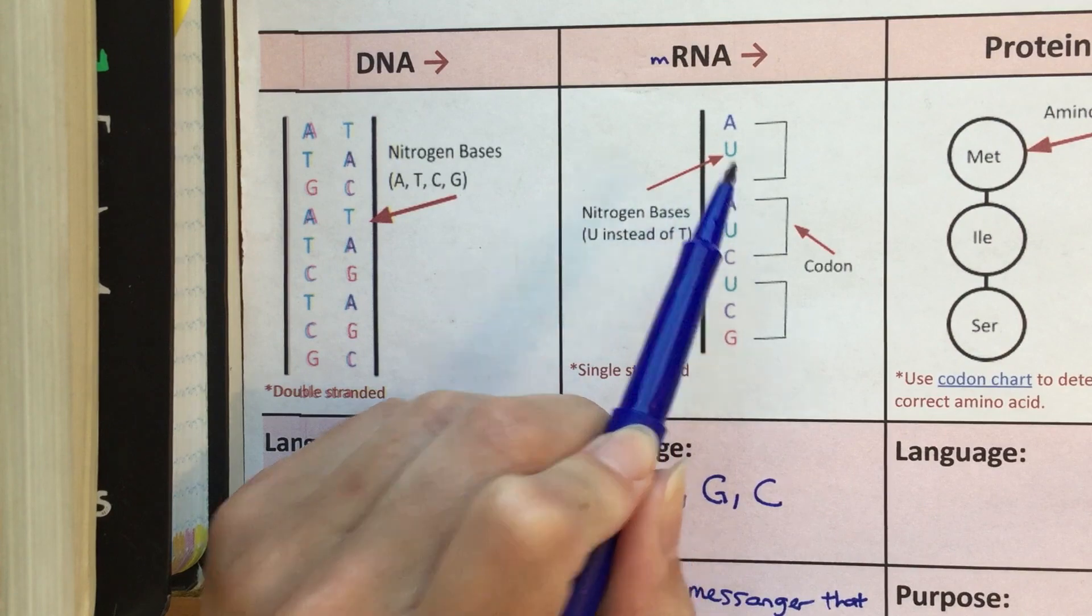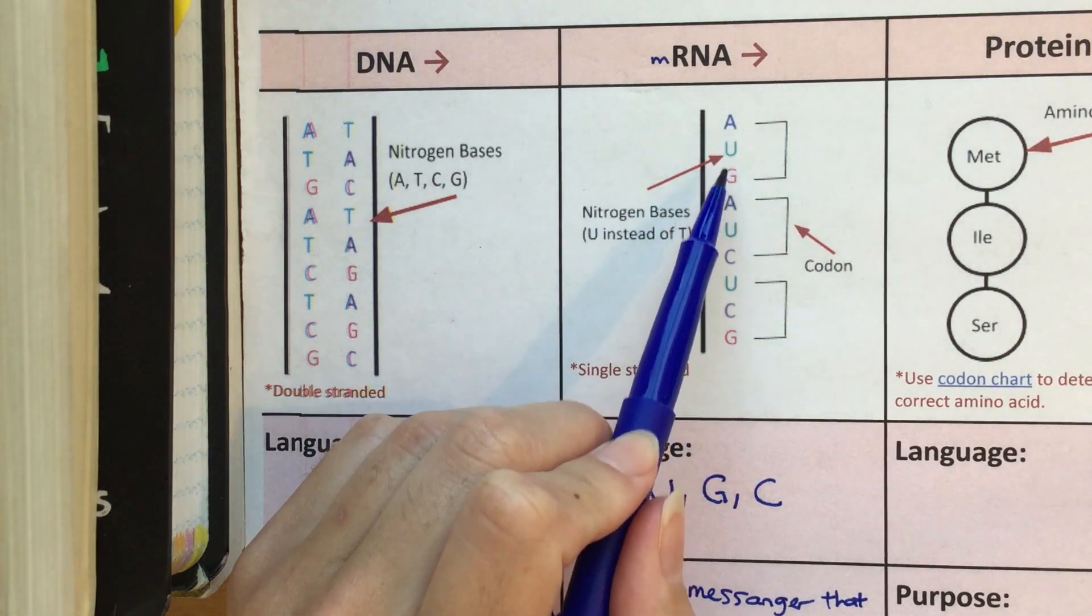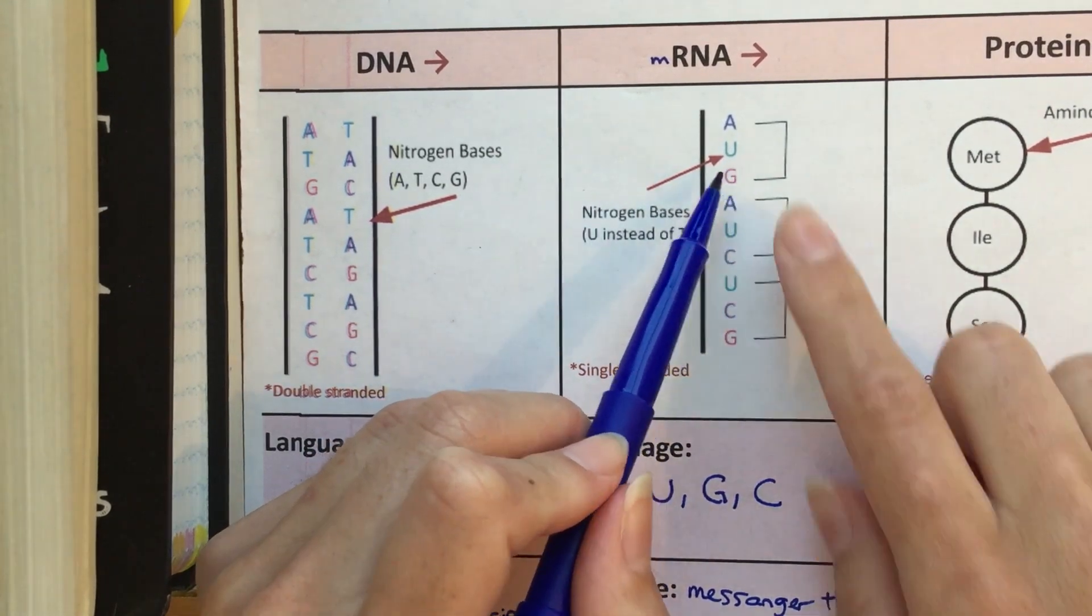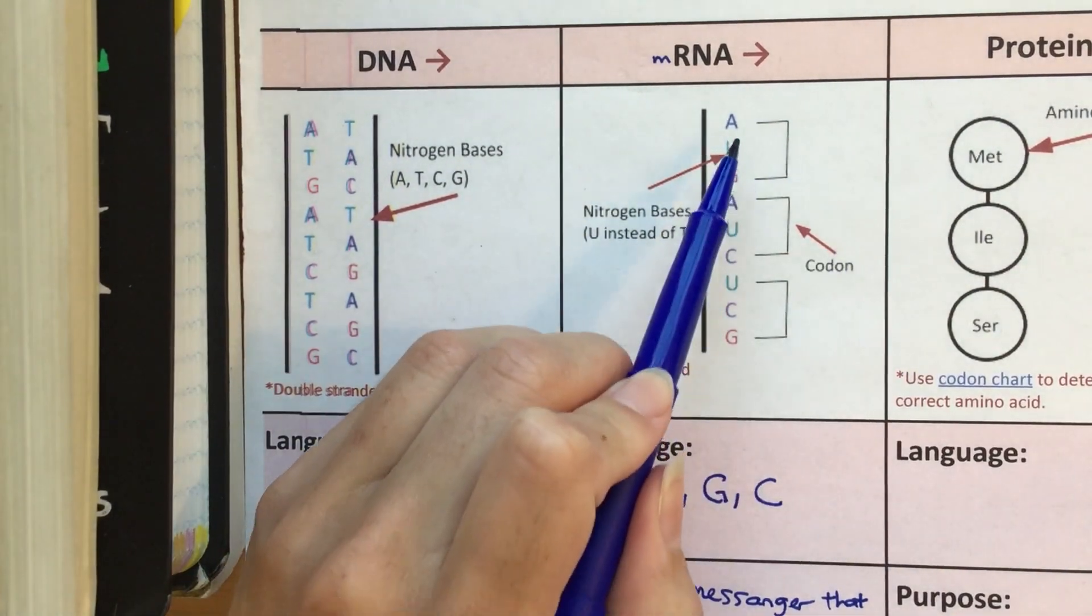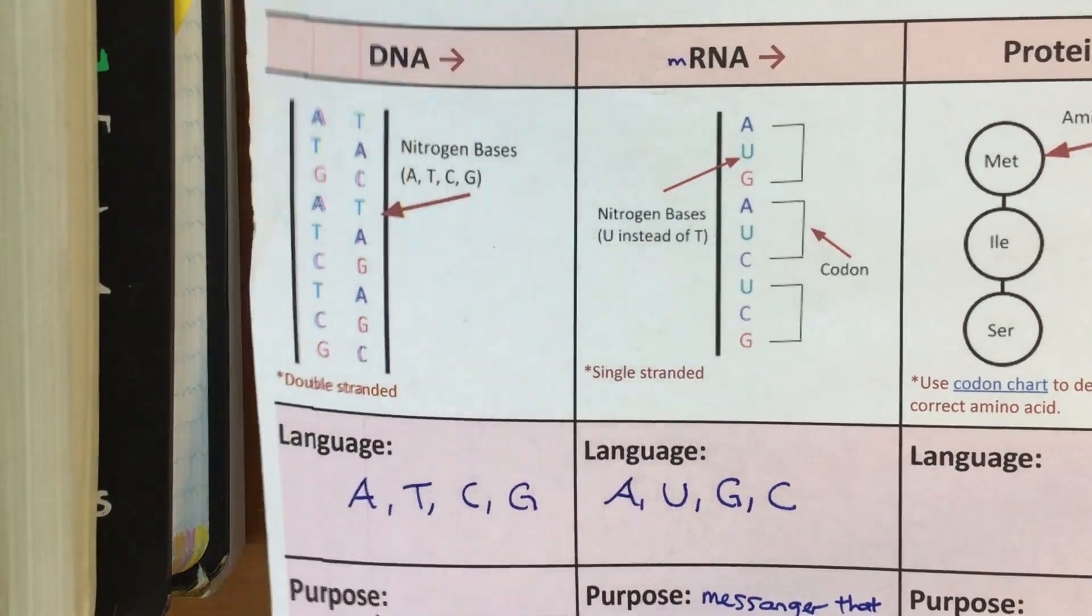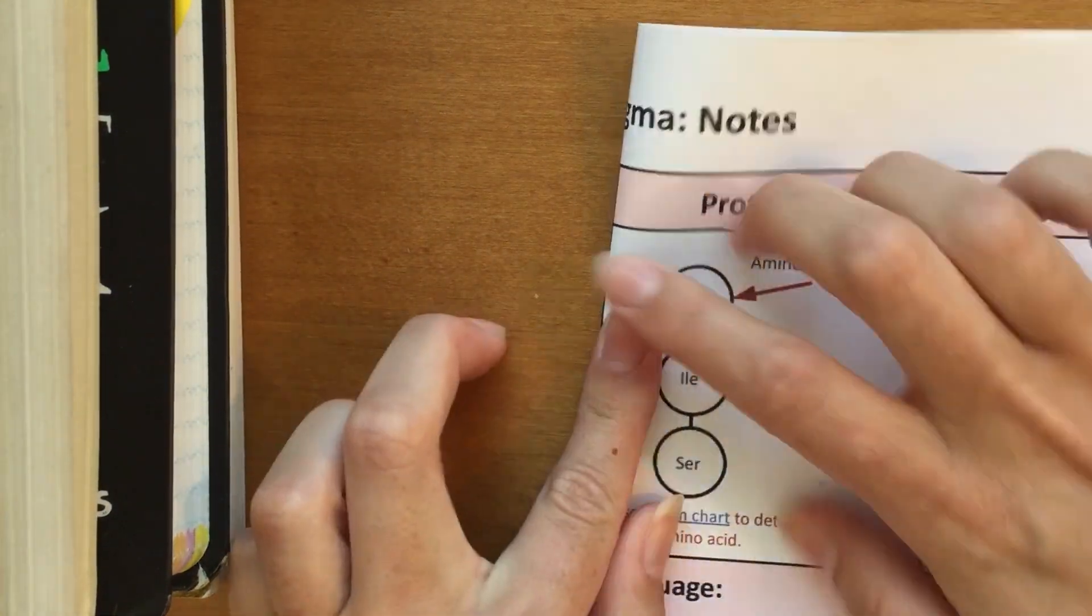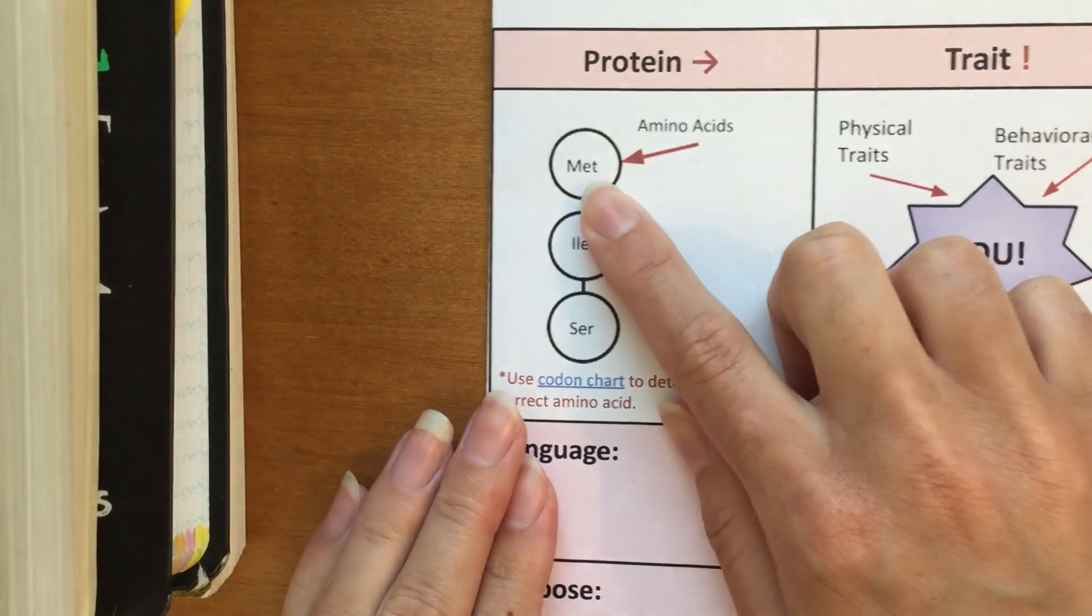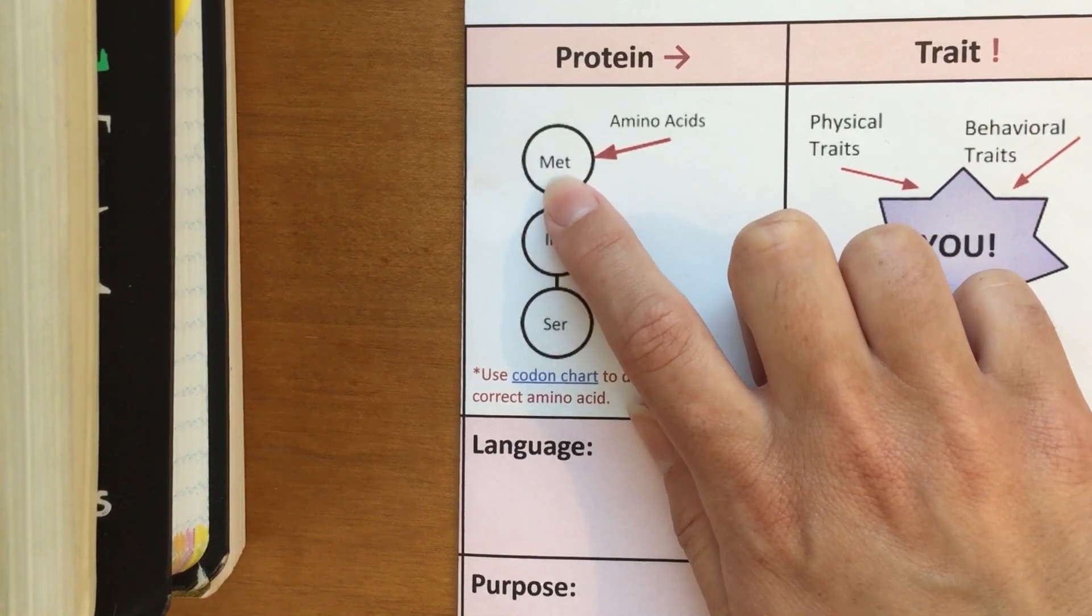Each set of three letters codes for something called an amino acid. I'm going to show you on a different video how to determine what those three letters—like how do I know which amino acid AUG stands for. It's basically like a word, right? It has meaning. So in order to figure out what the meaning of AUG is, we need a separate chart that I'll show you on a different video. Over here, I'm just going to fold this paper so it fits on my screen. Using something called a codon chart, I was able to figure out that AUG stands for an amino acid called methionine, abbreviated MET for short.